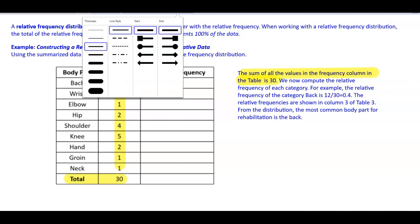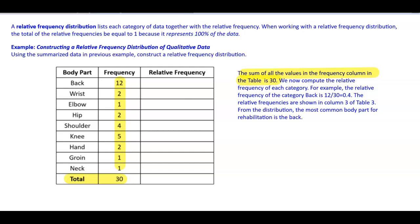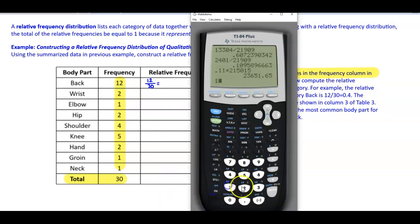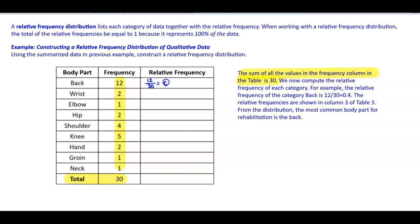We compute the relative frequency for each category. For the category 'back,' the frequency is 12, divided by the total of 30. Calculating 12 divided by 30 gives us 0.40. From this distribution, the most common body part requiring rehabilitation is the back, because this relative frequency is larger than any other.